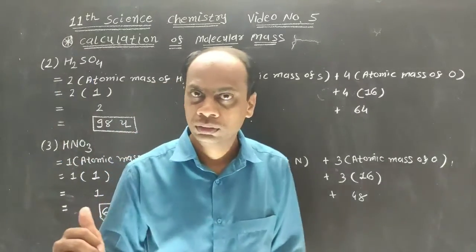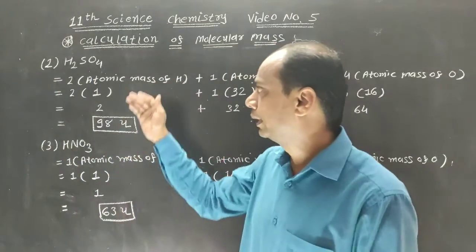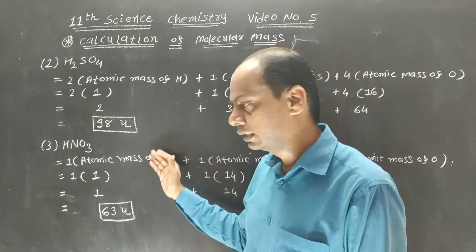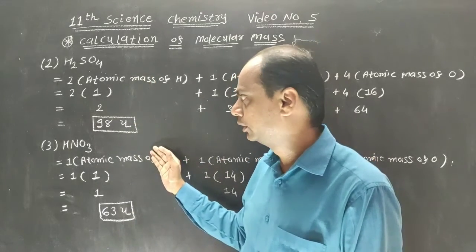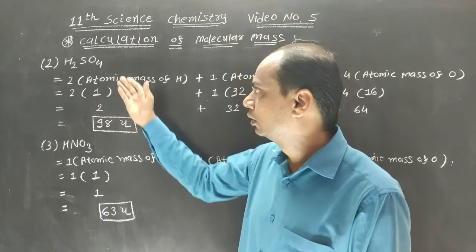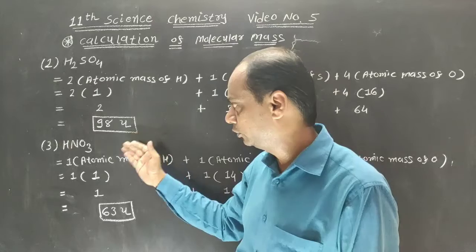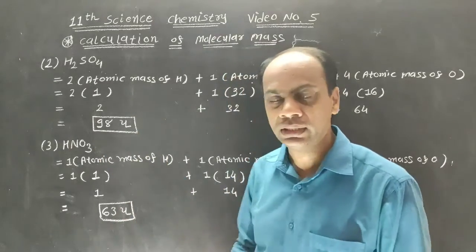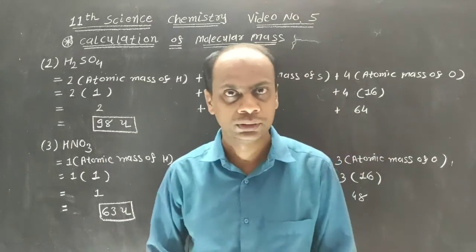So these are the two examples: sulfuric acid with molar mass 98u, and nitric acid with molar mass 63u.